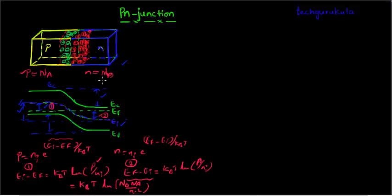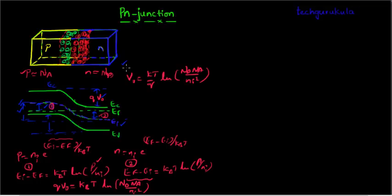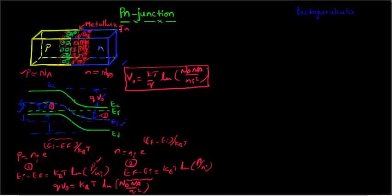This total energy difference equals Q times V₀. So we can write V₀ equals (KT over Q) times ln(ND·NA over NI squared). This is a very important equation to remember for solving problems. The point in the PN junction where the junction is exactly formed is known as the metallurgical junction.